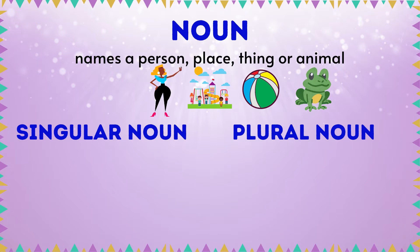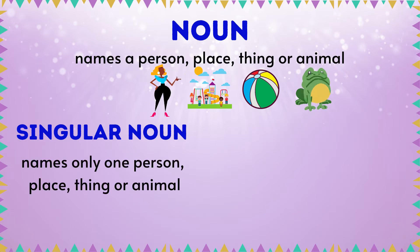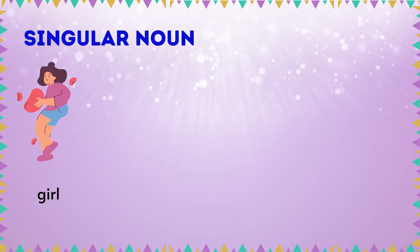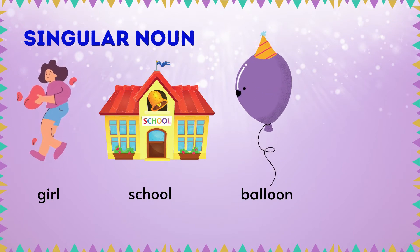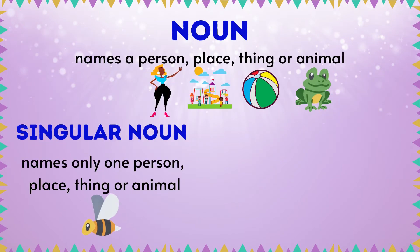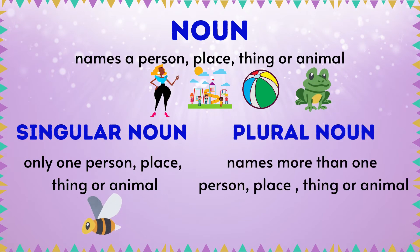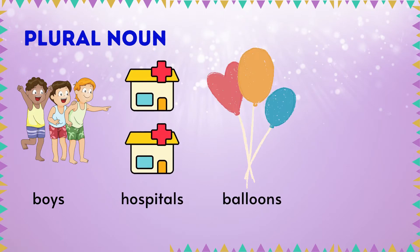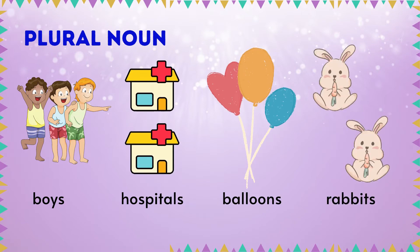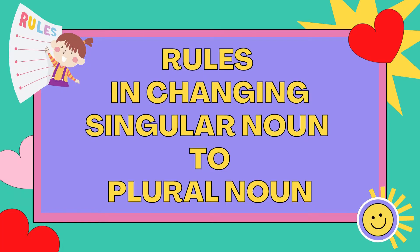Nouns can be singular or plural. A singular noun is a noun that names only one person, place, thing, or animal. A plural noun is a noun that names more than one person, place, thing, or animal. There are a few rules we must follow in changing a singular noun to a plural noun.